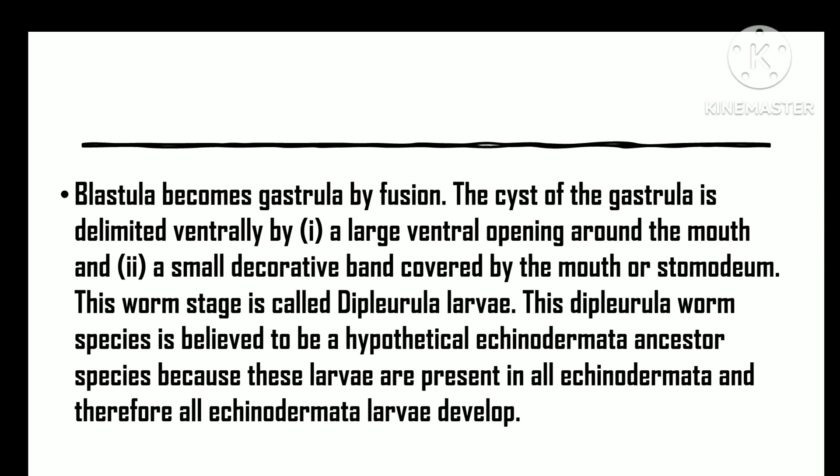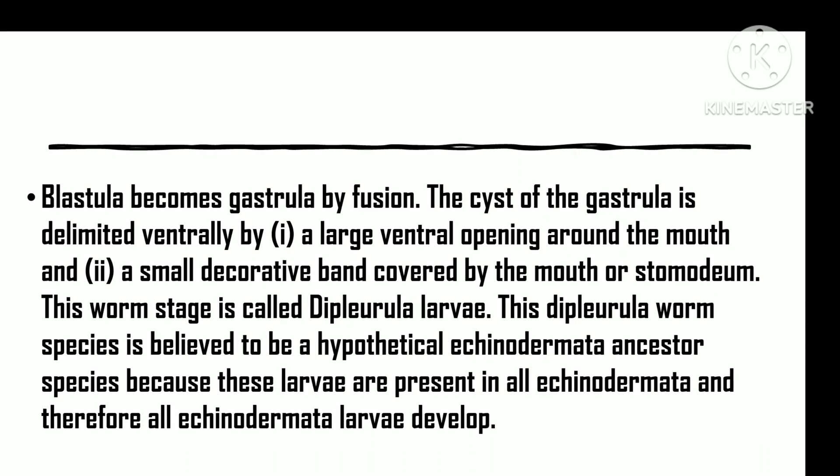This larval form is regarded as the hypothetical ancestral form of the echinoderms. As this larva is universally present in all echinoderms, all the larvae of echinoderms have been derived from it. So this larva represents an ancestral form for the primitive deuterostomes.